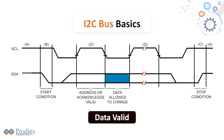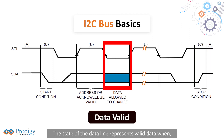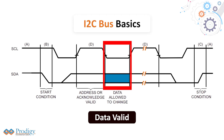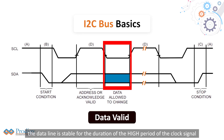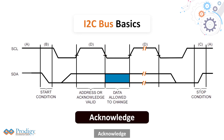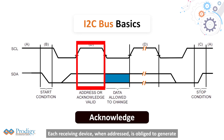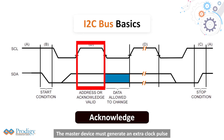Data valid: the state of the data line represents valid data when, after a start condition, the data line is stable for the duration of the high period of the clock signal. Acknowledge: each receiving device, when addressed, is obliged to generate an acknowledge after the reception of each byte. The master device must generate an extra clock pulse, which is associated with this acknowledge bit.